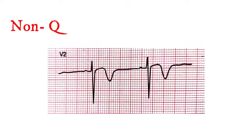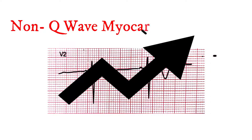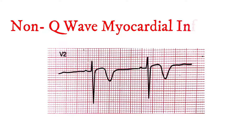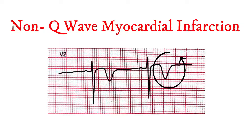If full thickness myocardial damage does not occur, then Q waves may not be seen. Loss of R wave progression indicates loss of myocardium. In the affected territory there is extensive T wave inversion. Such patients are at increased risk of re-infarction.